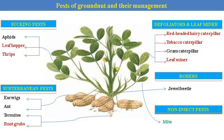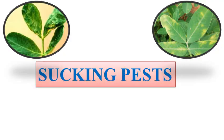Pests of groundnut having the second pest complex include sucking pests like thrips. There are also subterranean pests — earwig and termite, white grubs. Defoliators include the red hairy caterpillar, tobacco leaf-eating caterpillar, gram caterpillar, leaf miner, borer, and jewel beetle. In the later stage, after maturity, there are also non-insect pests like mites.